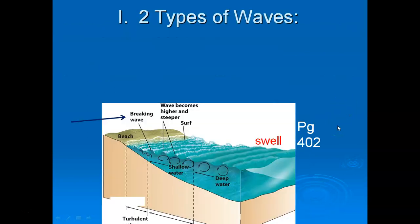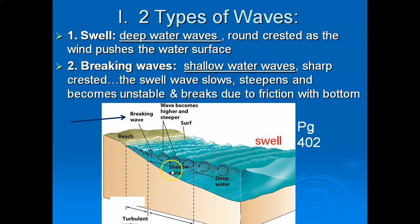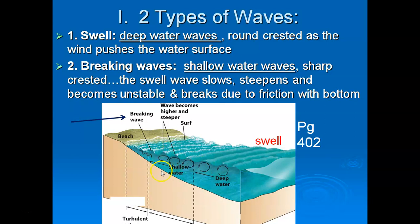There are two types of waves. The first type is known as swell — these are waves found out in deep ocean water, and they're round-crested, representing the wind pushing the surface of the water along. The second type is known as a breaking wave, found in shallow waters — the type you see at the beach. As the swell approaches shallow water, it feels frictional resistance with the bottom, slows down, surges upward, becomes unstable in height, and eventually breaks.